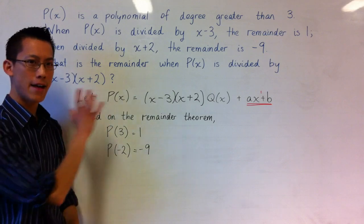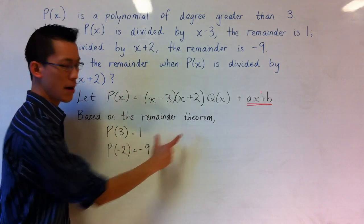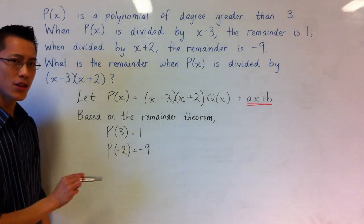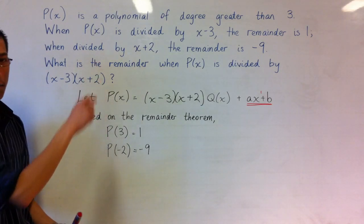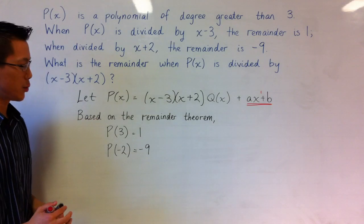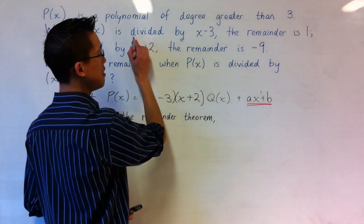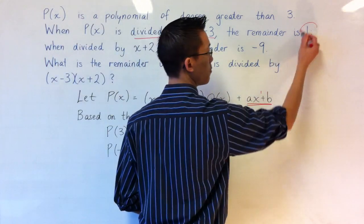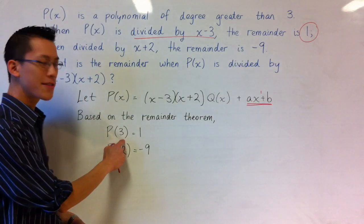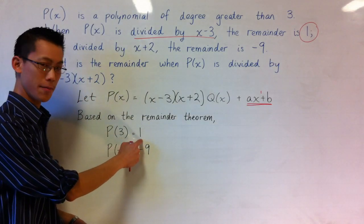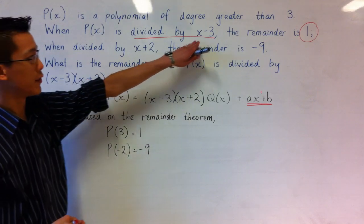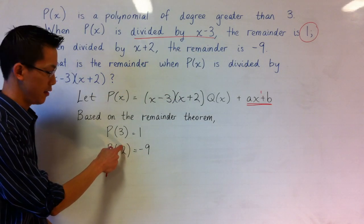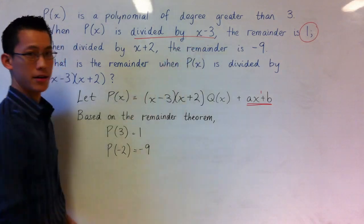Now having set up the question in this way I want to recall your mind back to the remainder theorem which is something we learned very early in polynomials. Based on the remainder theorem I can interpret the data given in the question in this way. Since the remainder when the polynomial is divided by x minus 3 is 1, I can make this statement: P(3) equals 1. I can find the remainder when divided by x minus 3 by evaluating the polynomial at 3. You see 3 is the zero of x minus 3.